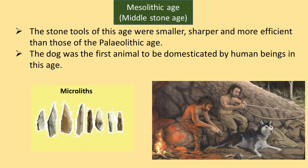Domestication of animals and plants was seen for the first time in this age. The dog was the first animal to be domesticated.